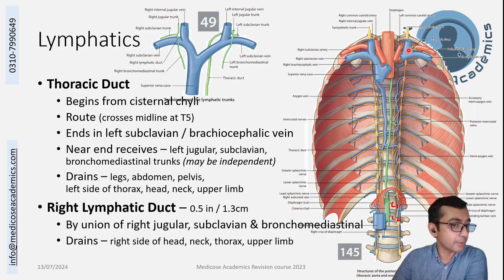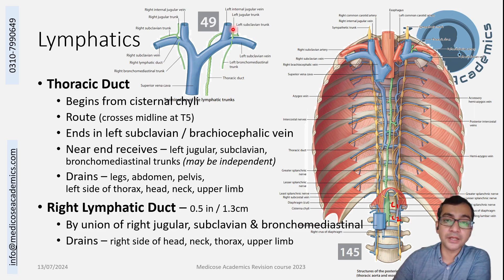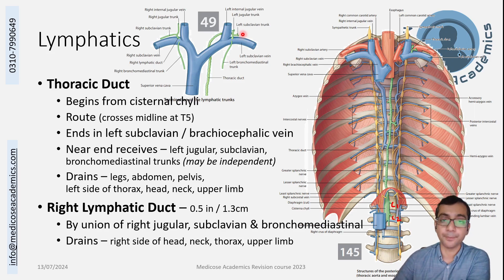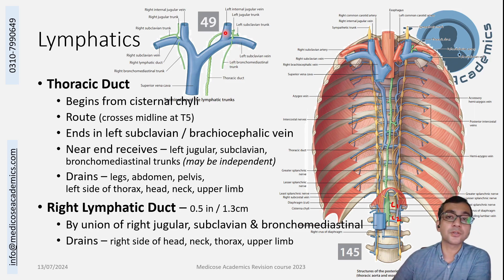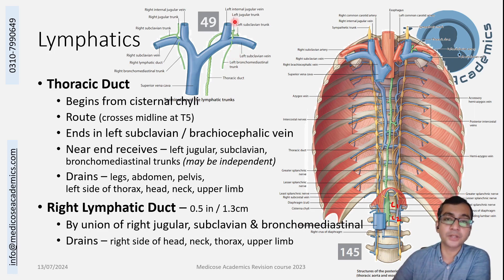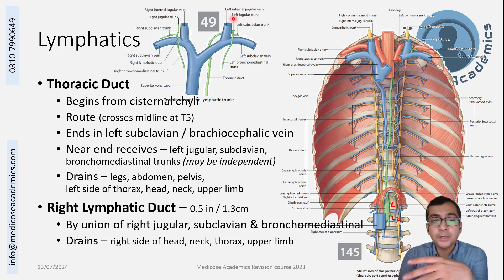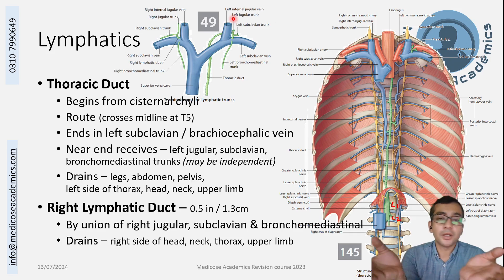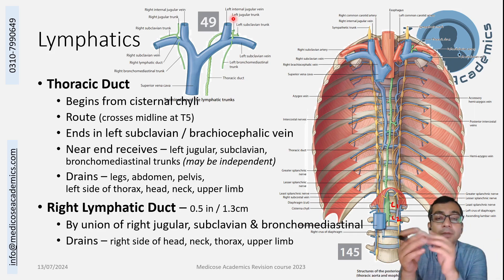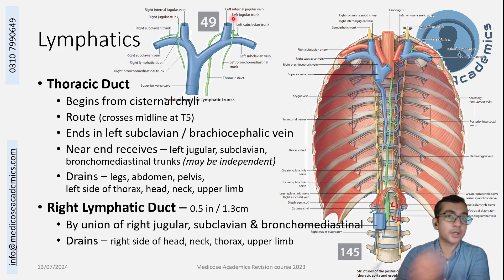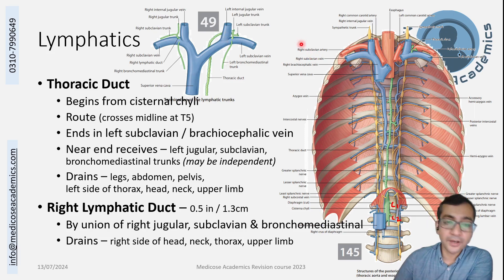Just before terminating, the thoracic duct receives two more lymphatic channels: the left jugular trunk, draining the left side of the head and neck, and the left subclavian trunk, draining the left upper limb. There is considerable variation — the bronchomediastinal trunk, left jugular trunk, and left subclavian trunk may join together at one point, enter independently, or in combinations, draining into the subclavian, jugular, or the angle between the two on the left side.